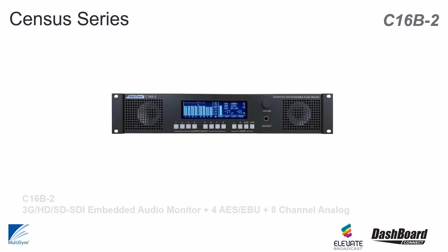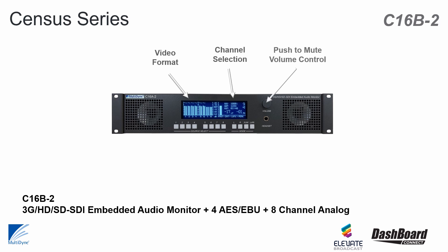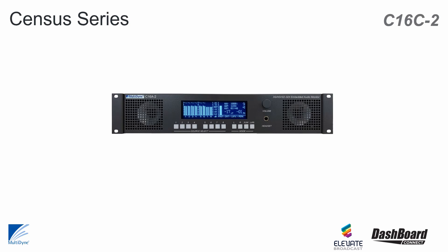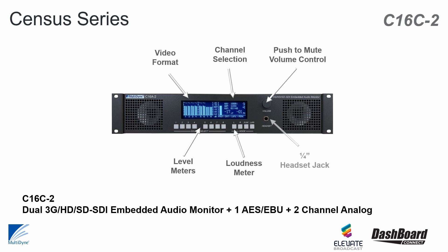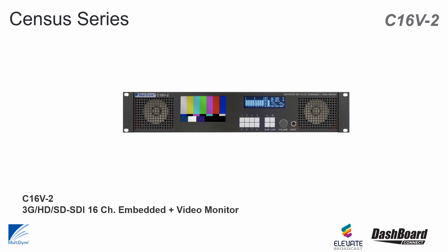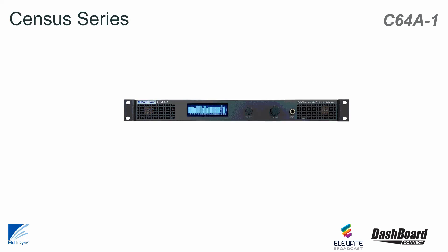Importantly, the C-16A-2DD has an integrated Dolby E, DD, and DD Plus decoder. The C-16B2 is the equivalent solution with AES-EBU Digital and Analog Audio Monitoring. While the C-16C2 has Dual 3G HD SD SDI Embedded Audio Monitoring with 1 AES-EBU and 2 Analog Channels.